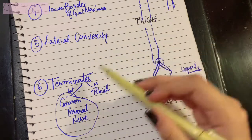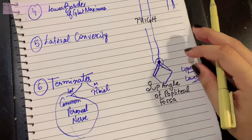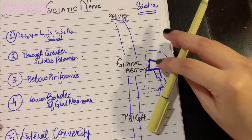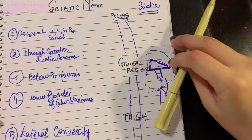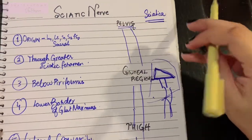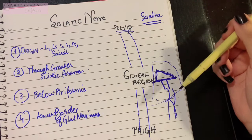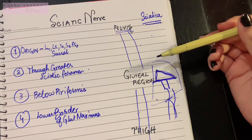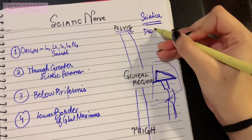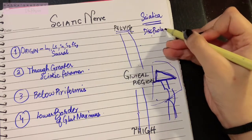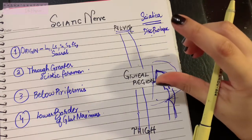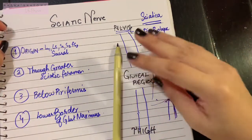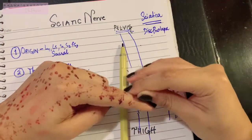Since the common peroneal part goes laterally, it is going to provide your lateral side of the leg. Hence, the pain will radiate to the back of the thigh due to sciatic nerve and to the lateral side of the leg due to common peroneal nerve. The patient usually complains of shooting pain or current-like pain with sudden onset that settles and comes back. Sciatica can occur due to disc prolapse, when the intervertebral disc between two vertebrae is herniating.